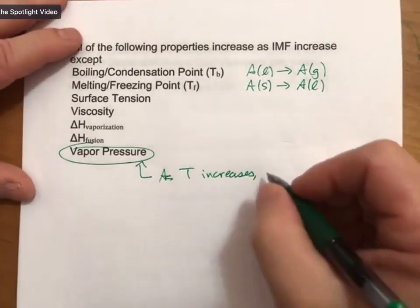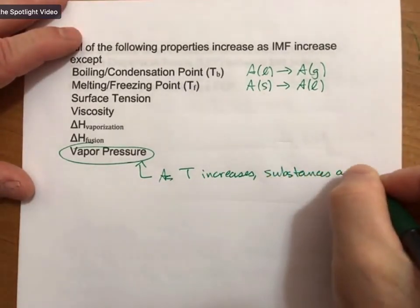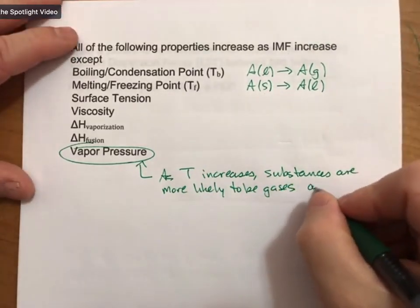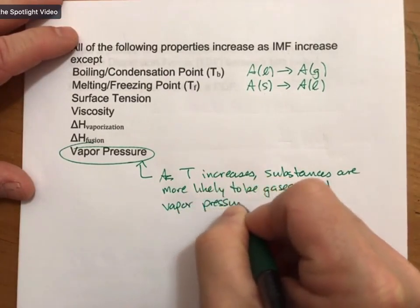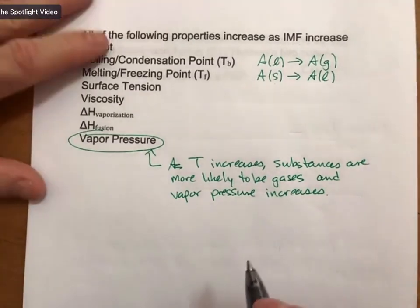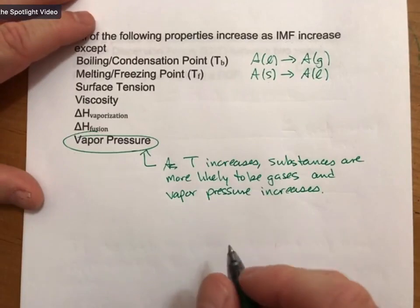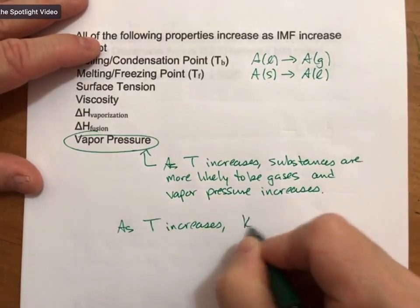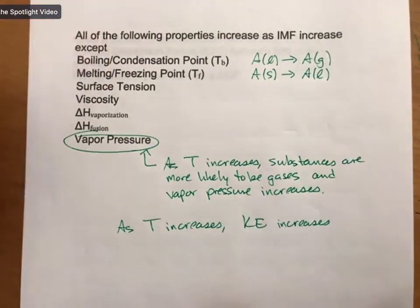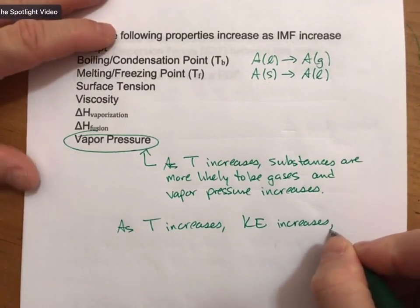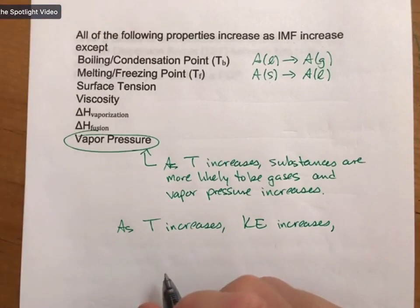As temperature increases, substances are more likely to be gases and vapor pressure increases. This goes back to something mentioned at the beginning of the course: there are two competing forces. As temperature increases, kinetic energy increases, and that kinetic energy tends to pull particles apart because they have more energy and are more able to fly away and become gases.